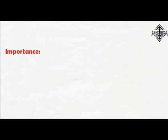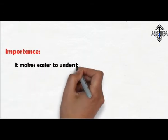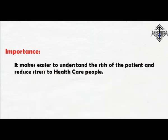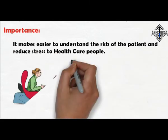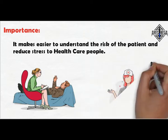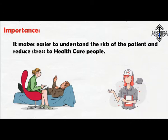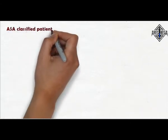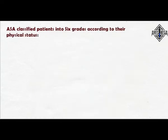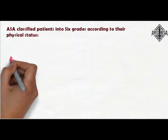Importance: It makes it easier to understand the risk of the patient and reduces stress to healthcare people. For example, if I meet an unknown person who is coming for surgery, I need to analyze him — I need to know his medication, history, and so much more. After listening to his words I have to report everything to the physician. To make this easier, ASA classified patients into 6 grades according to their physical status. Let's see them one by one.